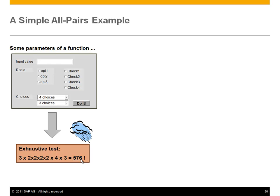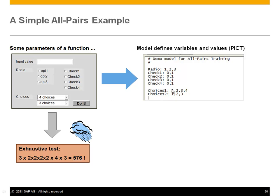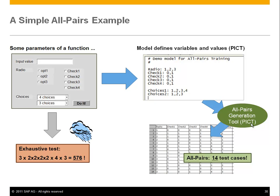So what does all pairs do? You define a model. The parameters — radio group, check boxes, combo boxes — are written down in a so-called model file. What you see here is the model file of the PICT tool. The syntax is simple: variable name, colon, then the comma-separated values that are possible. You run the all pairs generation tool, PICT, and get a list of test cases as output. Here, 14 test cases are generated.